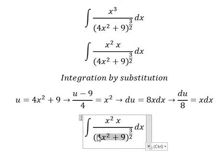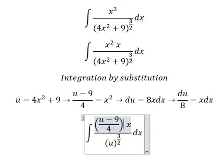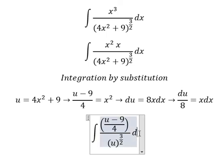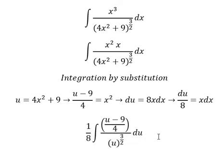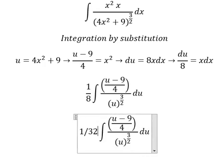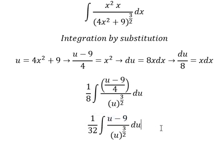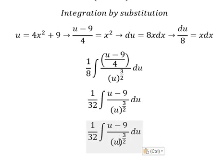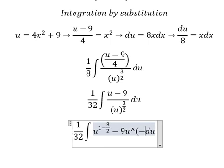So we change s squared for u, and we change the other part for this expression. We put the 4 outside, and together with the 8 we have one over 32. Then we have u divided by this one and 9 divided by this one, giving us u to the power of 1 minus 3 over 2, and negative 9u to the power of negative 3 over 2.